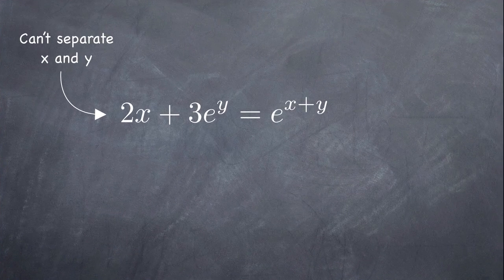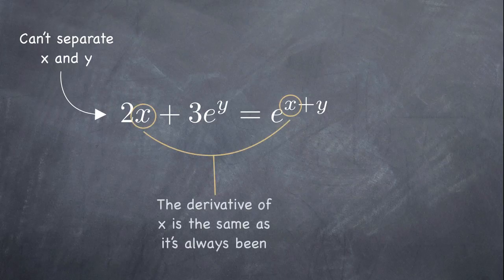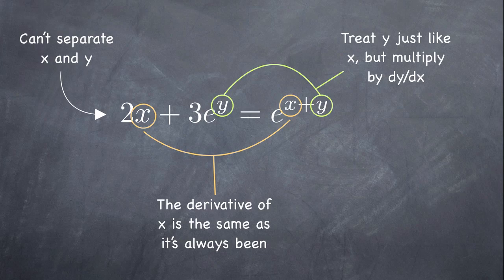With implicit differentiation problems, where our variables can't be separated, we'll be treating the x variable in the same way we always have. We'll take its derivative according to the derivative rules we learned last time. What's different is how we treat y. Before, our functions have always been y equals and then something in terms of x. And when we took the derivative, we'd change that y into y prime.